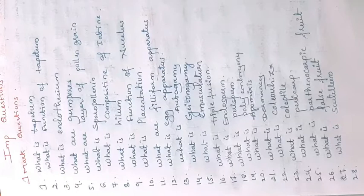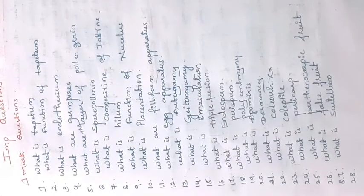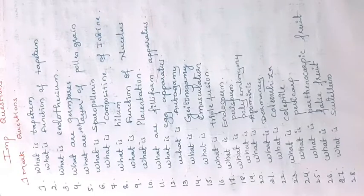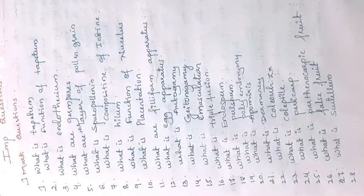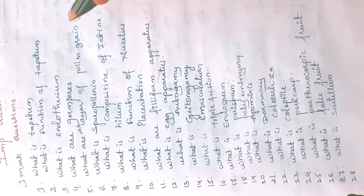What are the layers of pollen grain? The pollen grain has two layers. The outermost layer is the exine and the innermost layer is the intine. After the exine and intine, you can also see the plasma membrane.